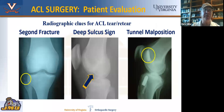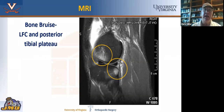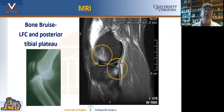Here's an example of the Segond fracture — it's somewhat subtle, but you can see that little fleck off the lateral tibia, which is associated with the ALL injury. Also somewhat subtle is the deep sulcus sign — the sulcus, which is a normal structure, is actually deeper here because of the injury that happened with the pivot shift phenomenon. And if you had a previous ACL reconstruction, you can critically look at prior tunnels. The bone bruise occurs where the lateral femoral condyle and the tibial plateau on the lateral side actually impact each other. When you tear your ACL, you will often have a subluxation or dislocation of the knee that spontaneously reduces.